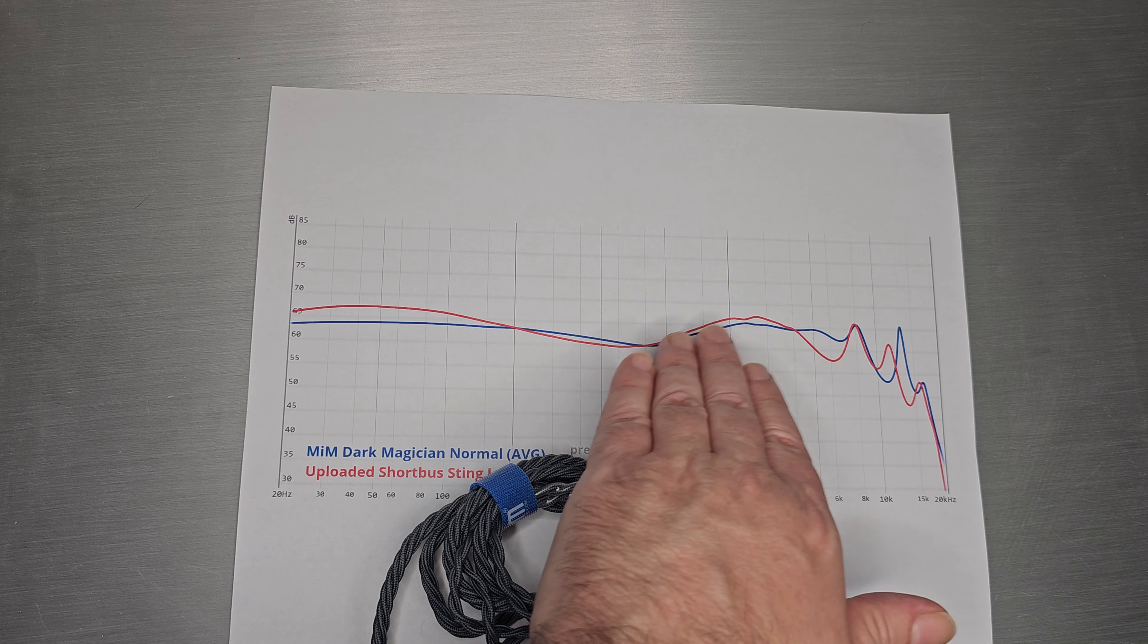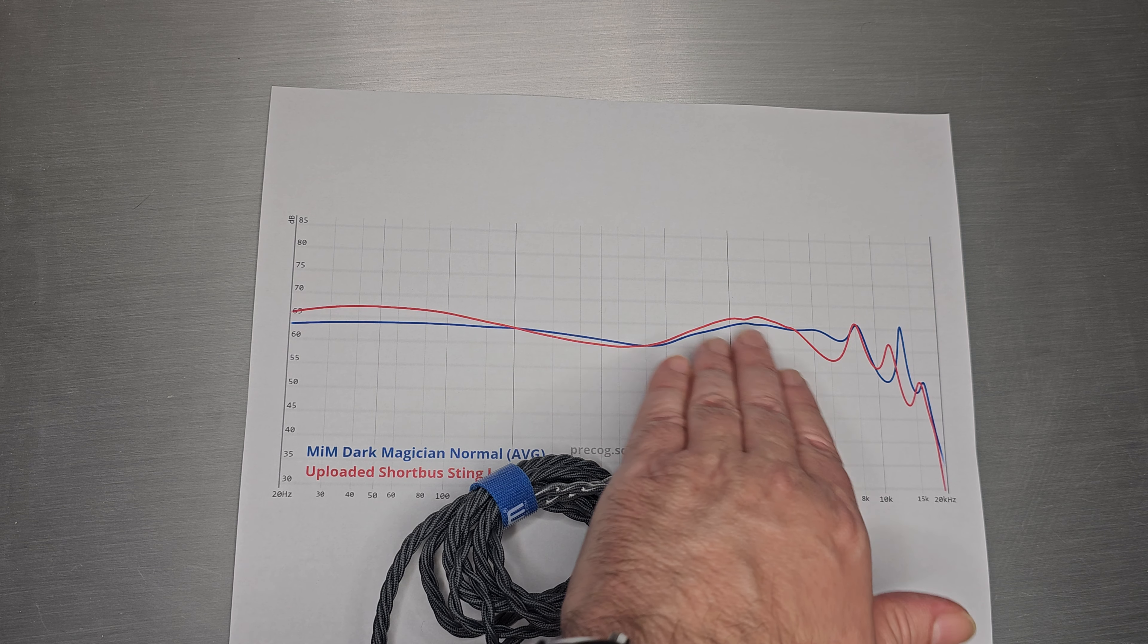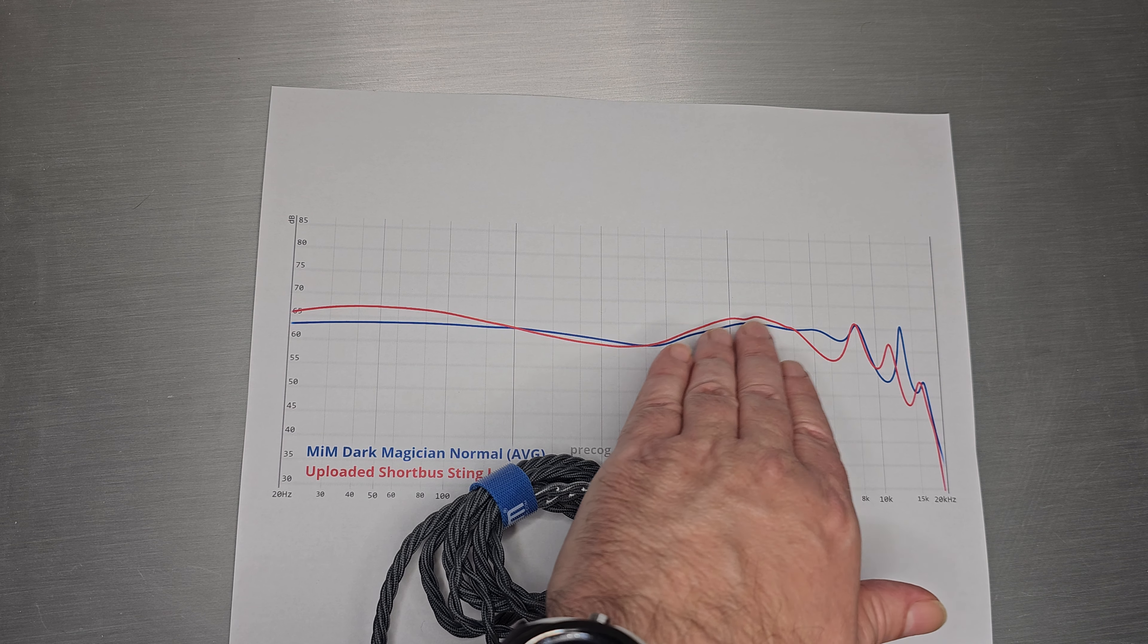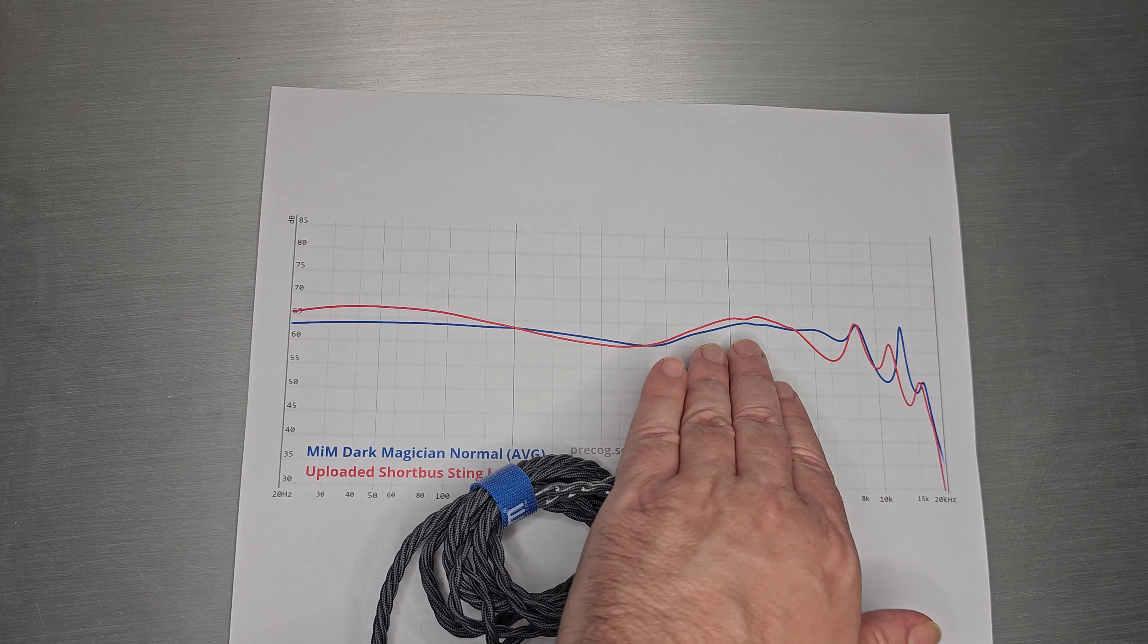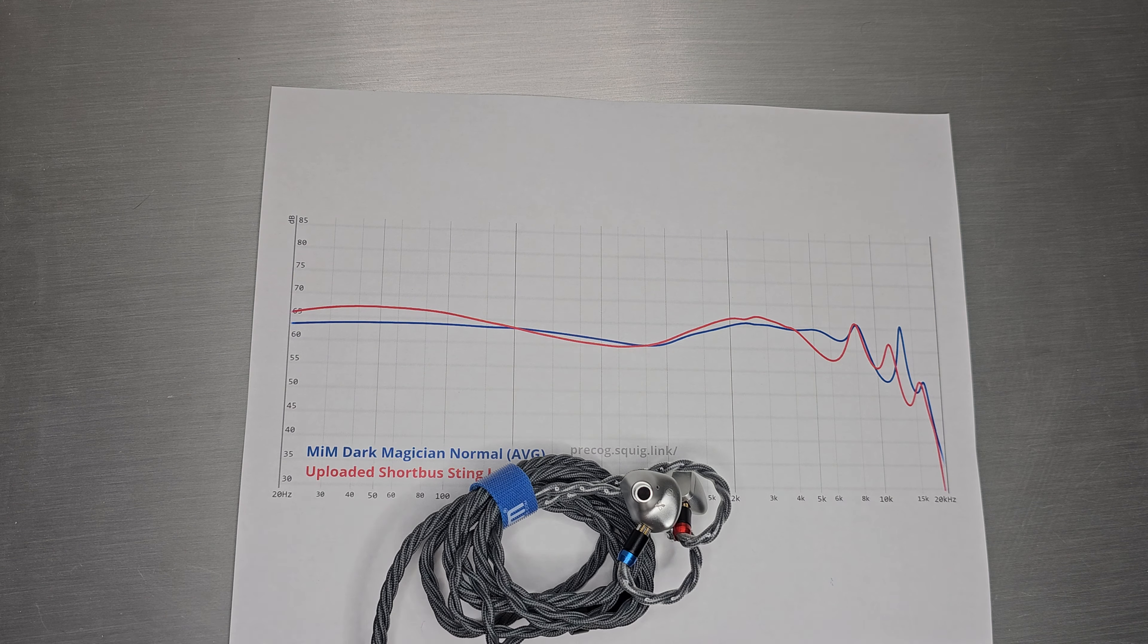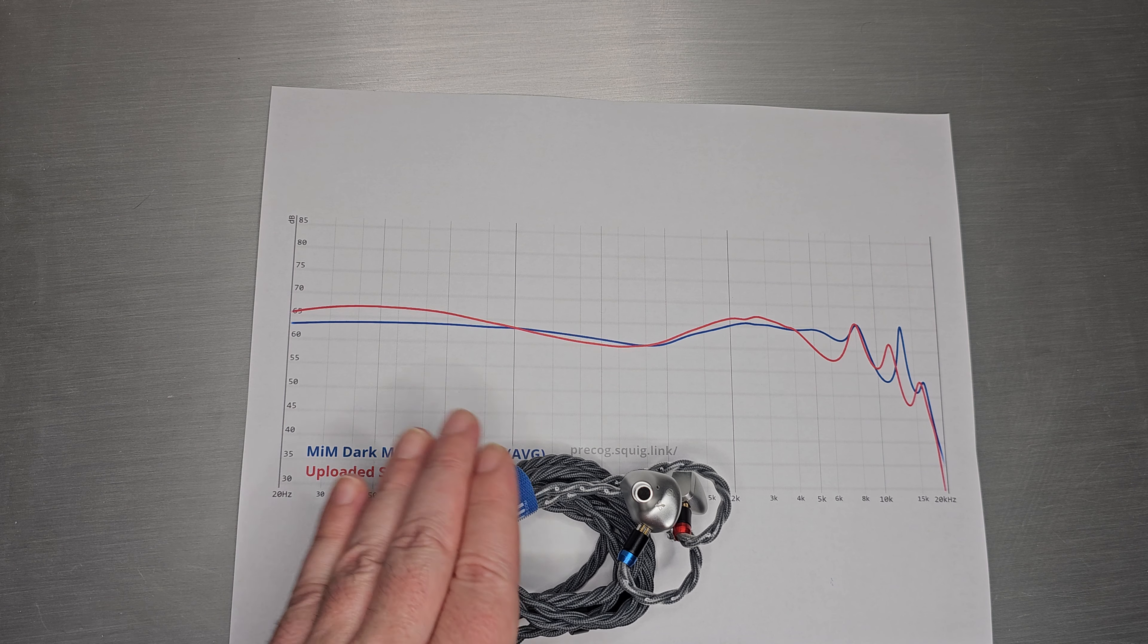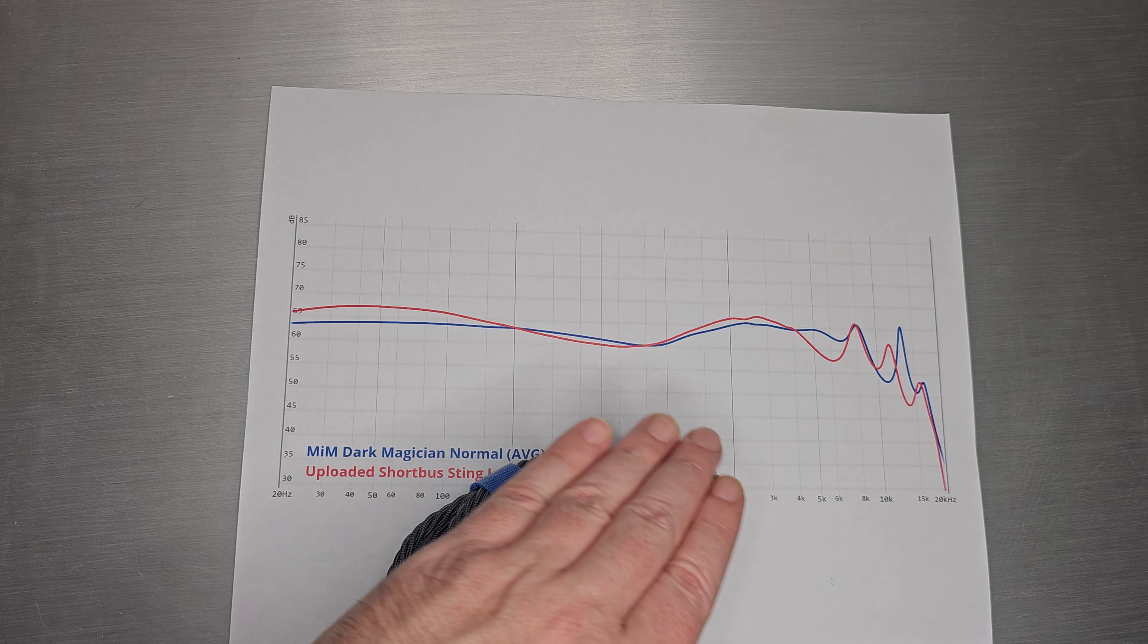He really kept my favorite part of Dark Magician - low pinna gain. Dark Magician is actually even lower and I think he brought it up a little bit, and I think that's the right move. Bring that up a little because we now have a little more bass, so you just need a little bit more there to make everything clean and clear.